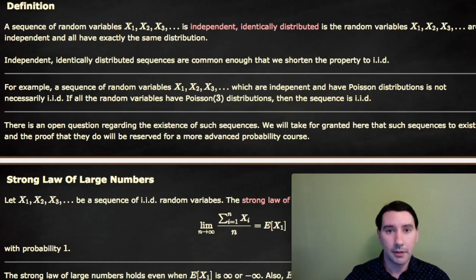The Strong Law of Large Numbers is a statement about a sequence of independent and identically distributed random variables. And that term means exactly what it says.